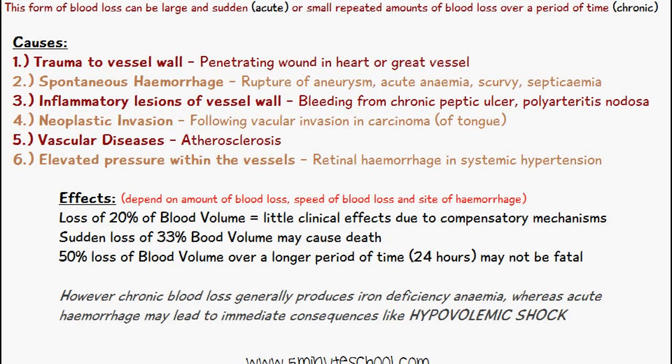Vascular diseases like atherosclerosis can cause hemorrhages, as can elevated pressures within the vessels — for example, retinal hemorrhages in systemic hypertension. The effects of having a hemorrhage depend on the amount of blood loss, the speed of blood loss, and the site of hemorrhage.